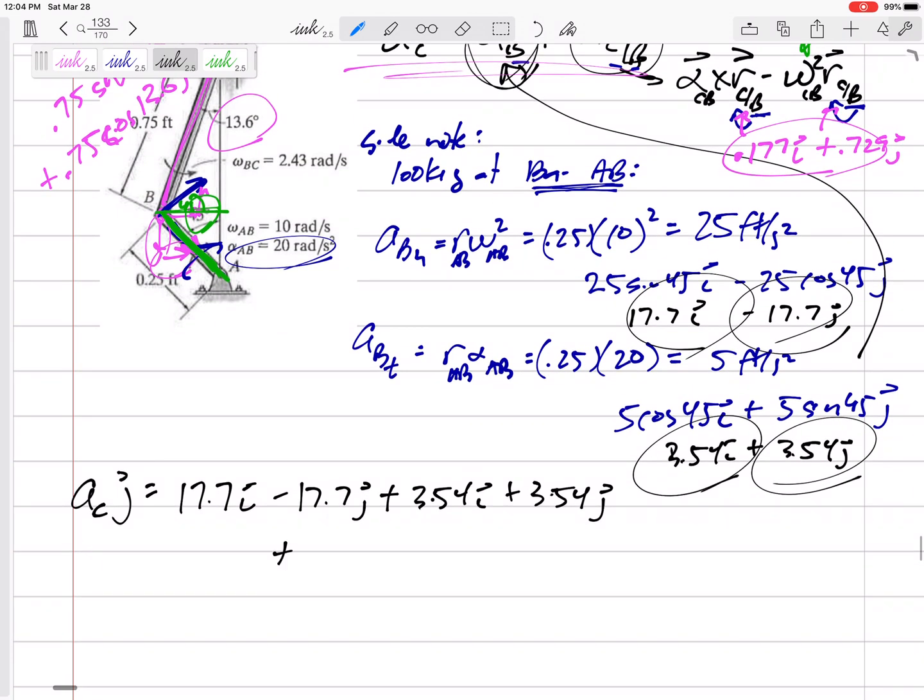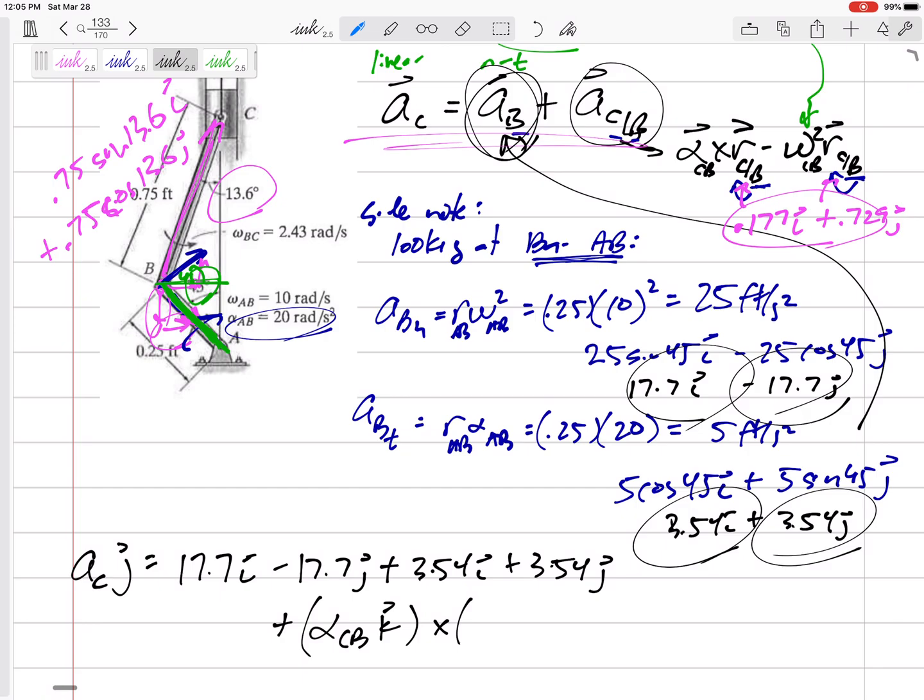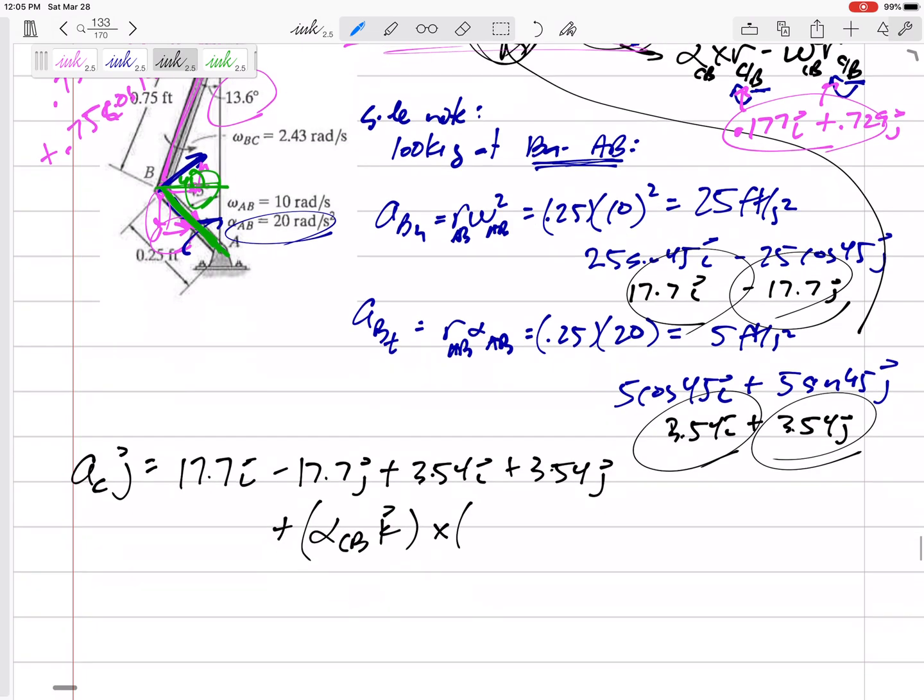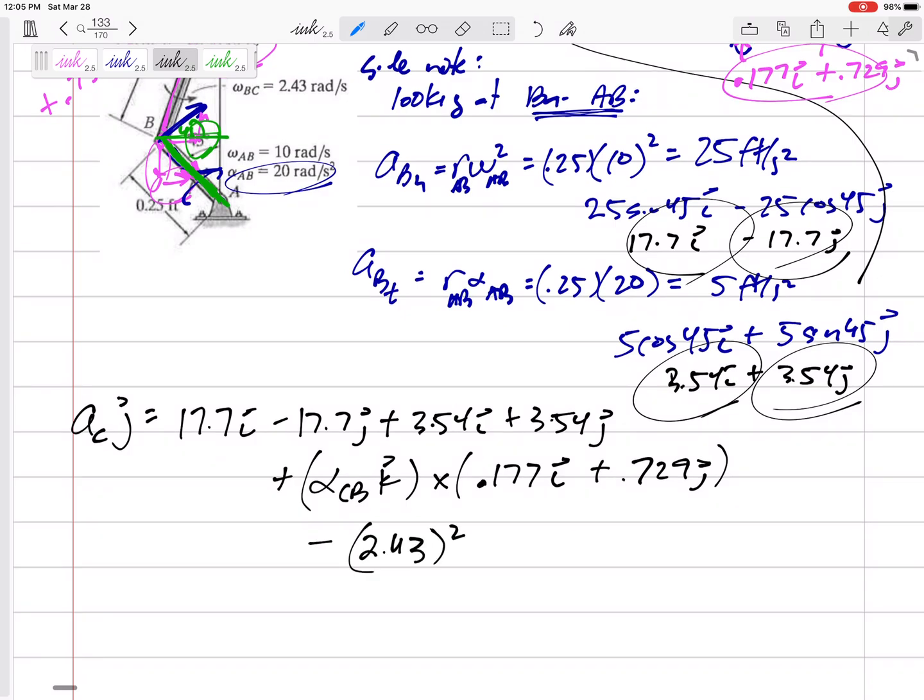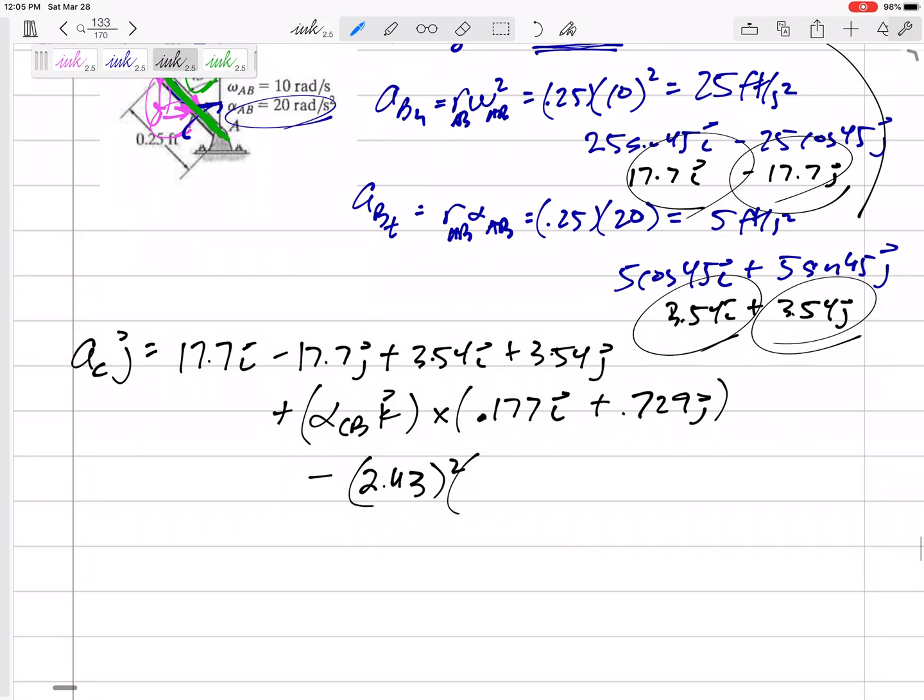And now plus alpha. Alpha_CB, I don't know. And generally, that's what it's asking for. That's one of the main things we're looking for. But I know it's in the K direction. Why? Because this is a two-dimensional problem. If all of my bars and velocities are in the XY plane, then my angular is in the K. It could be positive K, which is counterclockwise. Of course, it could be negative K, which would be clockwise. I'm guessing positive K, counterclockwise. So cross with 0.177 I plus 0.729 J minus omega squared. That was that 2.43 squared. So make sure for this omega that's inside of this relative term, make sure that's the omega for CB. That's the 2.43, not this 10. Don't plug in that 10 right there. And then times 0.177 I plus 0.729 J.